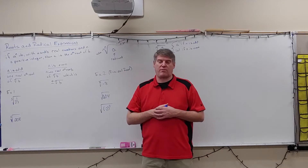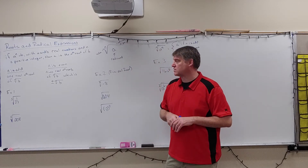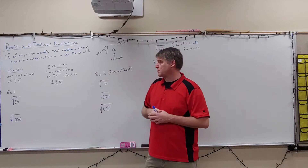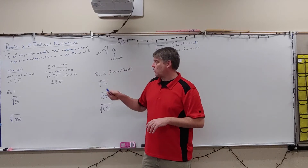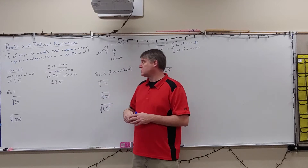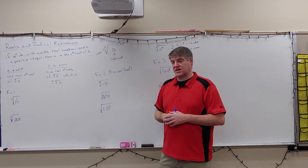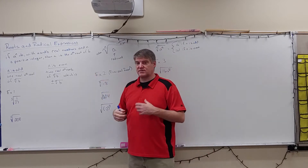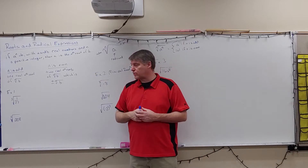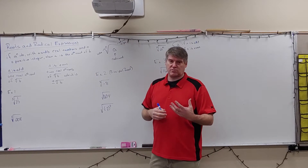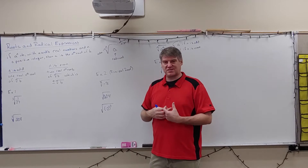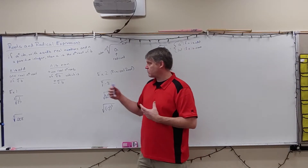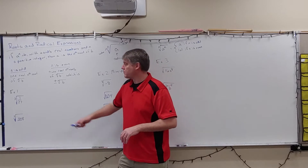We're going to talk about roots and radical expressions. If a to the n equals b, with a and b being real numbers and n is a positive integer, then a is the nth root of b. So if I take the nth root of b, I'm going to get a.